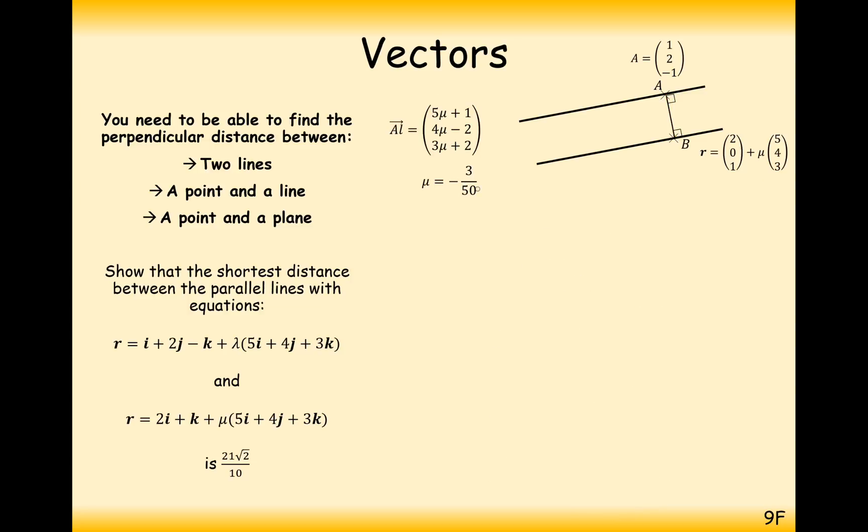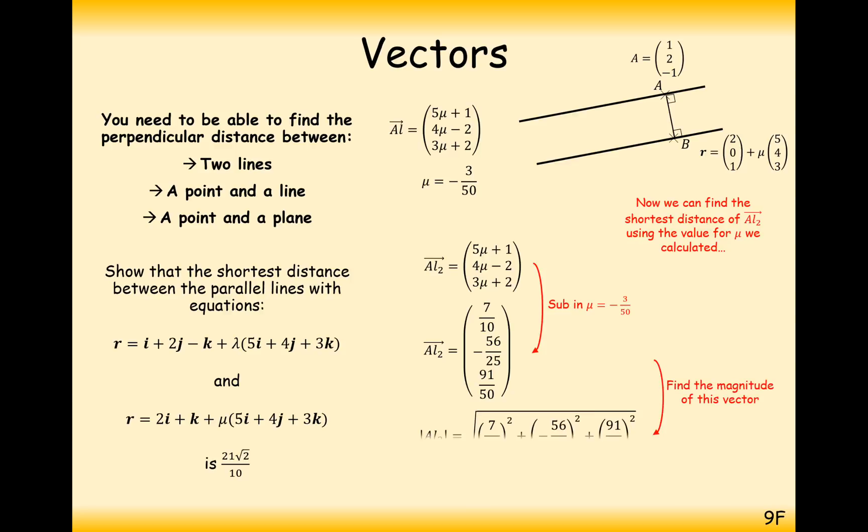So what can we now do with that? Well, if we now substitute mu equals minus 3 over 50 into our vector from A to L, that will give us the vector from A to B effectively. So substituting minus 3 over 50 and we get 7 over 10, minus 56 over 25, and 91 over 50. So the next thing for us to do is just to now find the length of this line. So a little bit of Pythagoras theorem and big long calculation in your calculator, and we get exactly what we are looking for, 21 root 2 over 10.